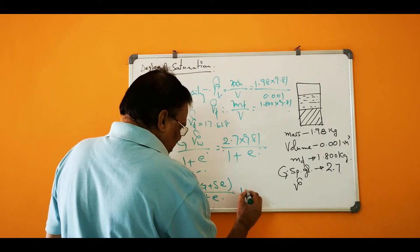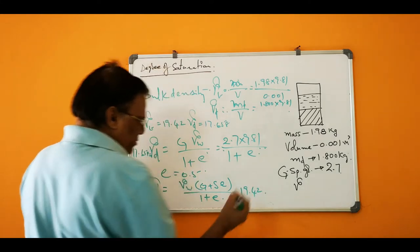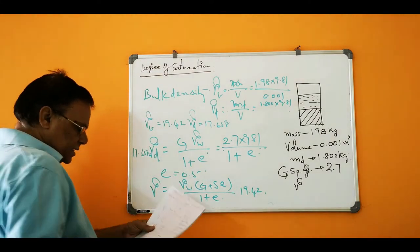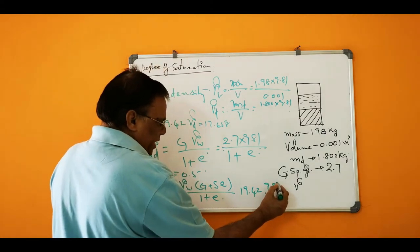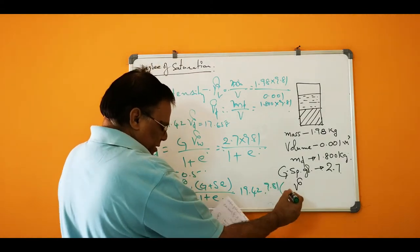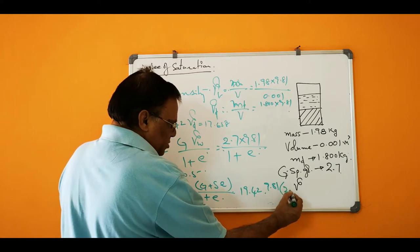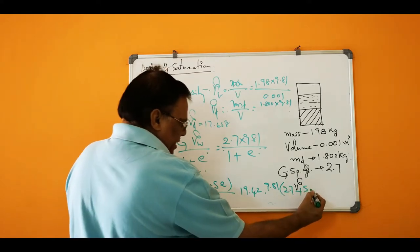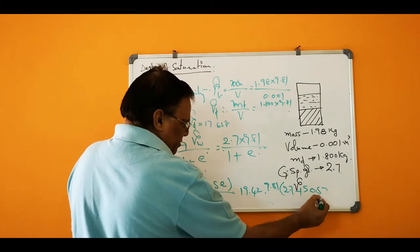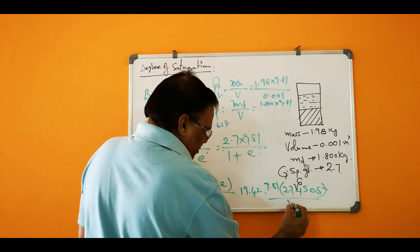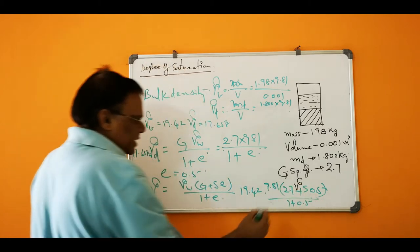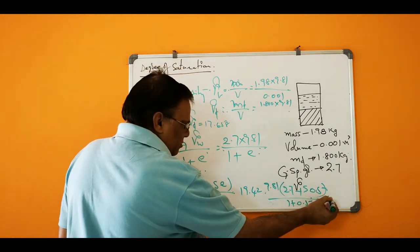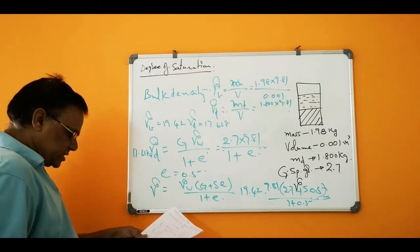So this is 19.42. So this is 19.42, that is gamma W into 9.81 into G is 2.7. S is to be calculated and E is 0.5 divided by 1.5. And this is equal to the saturation is